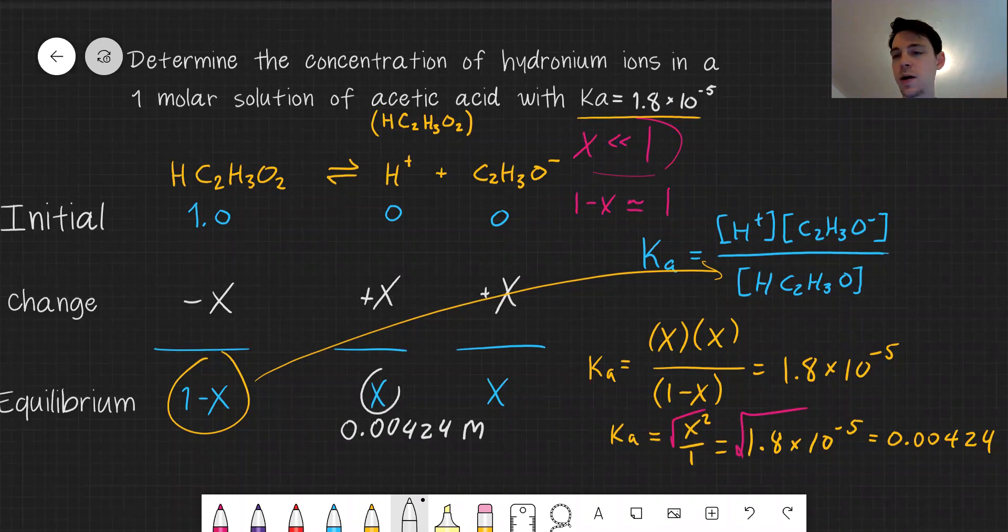We can see the amount of acid and the amount of acetic acid that's left over would be 1 minus 0.004, or very close to 1. So our assumption is accurate in this case.